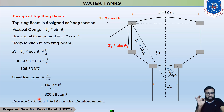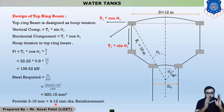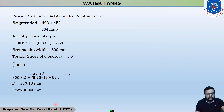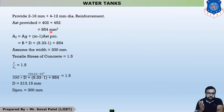Area of one 16 mm bar = π/4 × 16² = 201.06 mm². Area of one 12 mm bar = π/4 × 12² = 113.09 mm². Total steel provided = (2 × 201.06) + (4 × 113.09) = 854.50 ≈ 854 mm². Since 854 mm² > 820 mm² required, we are safe in design.